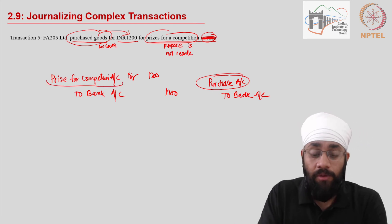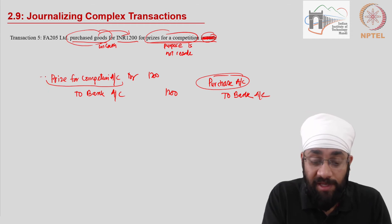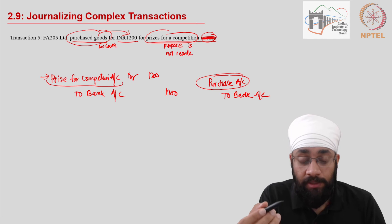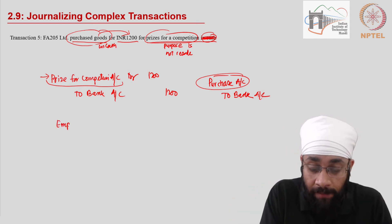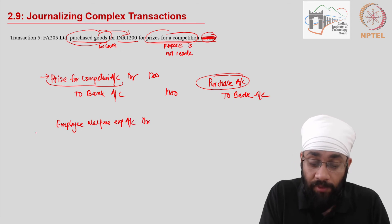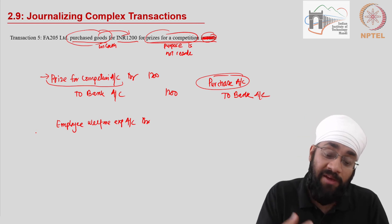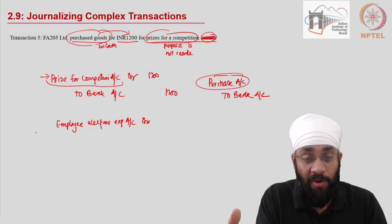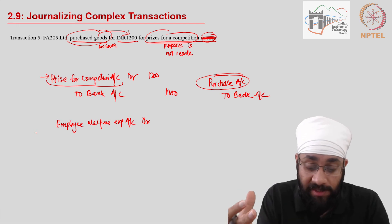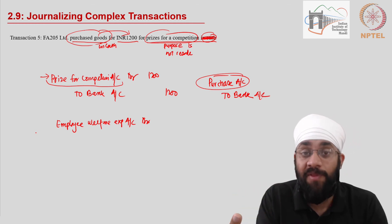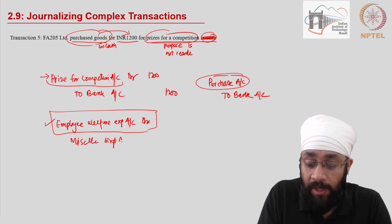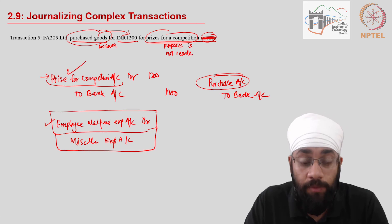What should be the right name of this account depends on the business. In the prescribed format of financial statements, there is an item called employee welfare expenses. Assuming these prizes are being given away in an annual staff competition or fun office activities to incentivize staff and boost morale, you could club them under employee welfare expenses, or they could go into miscellaneous expenses — whatever is the company's policy. The key idea is that the name of the expense should be written instead of purchase account.